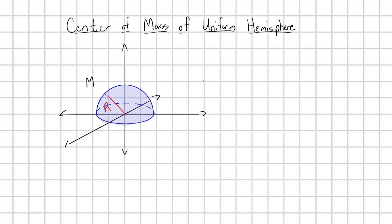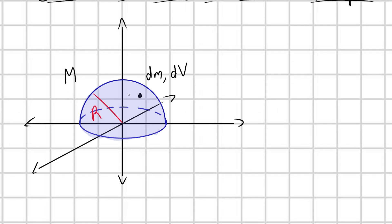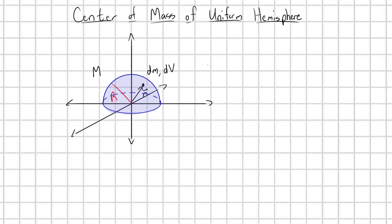We're going to start from definition. We know that this hemisphere can be thought of as being made up of a bunch of little infinitesimal mass elements dm, which occupy some infinitesimal volume dv. We can point to each of these little infinitesimal mass units with a position vector, little r.